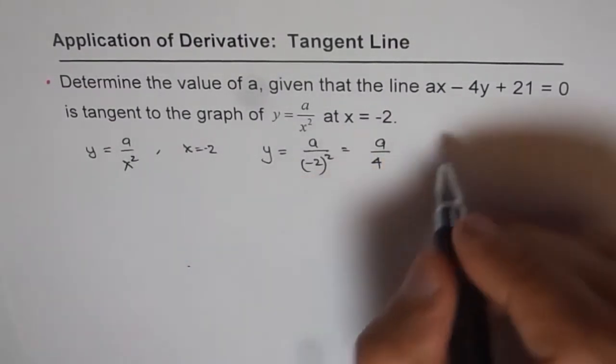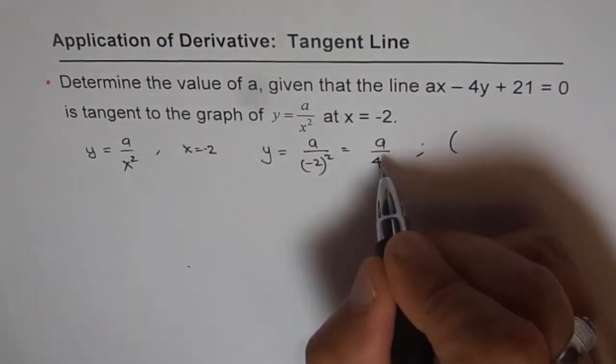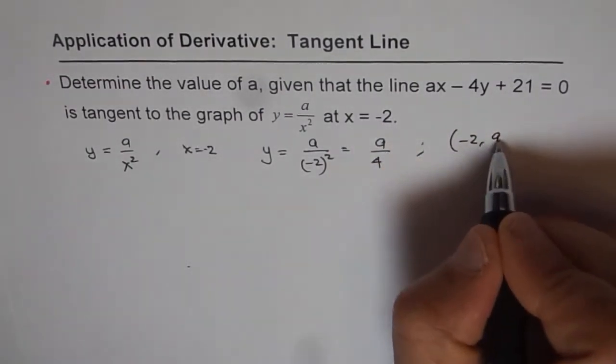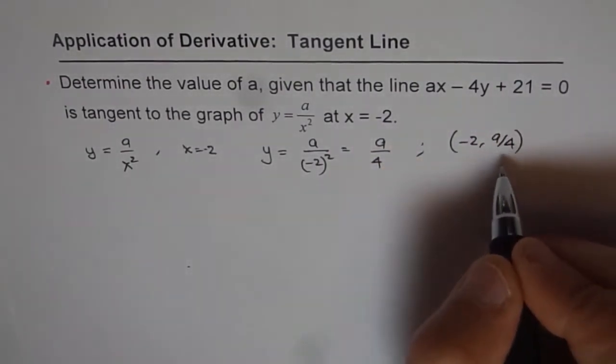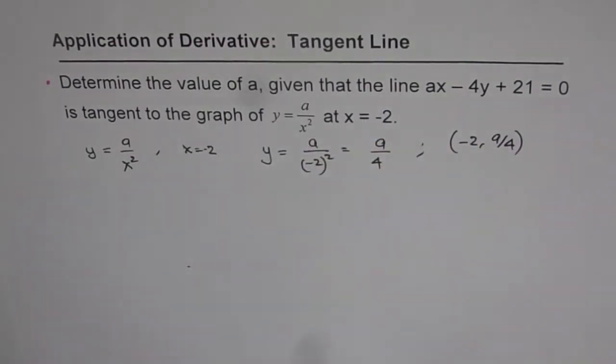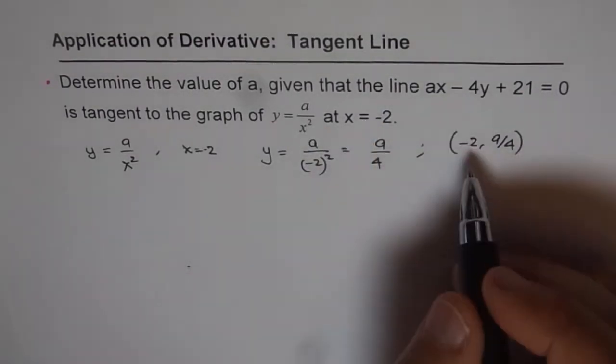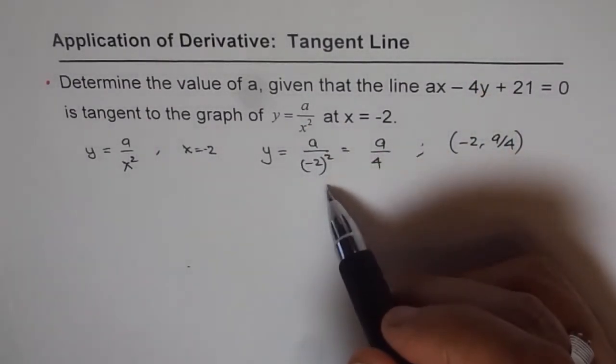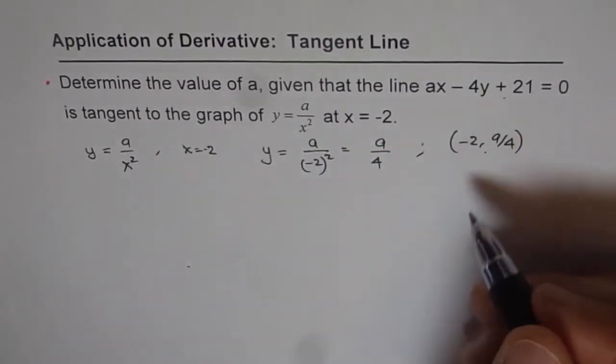So the coordinate point is basically, X value is minus 2 and the Y value is A over 4. So that is the coordinate point on the given function. Now, the question is that this line is tangent to this curve. That means this point lies on the line.